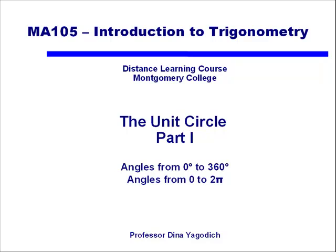This video is part one of two dealing with the unit circle. This is a very important part of the course, and one you really need to pay attention to. This will cover the angles between 0 and 360 degrees on the unit circle, as well as those same angles in radians. We're going to be paying particular attention to our special angles: 30 degrees, 45 degrees, and 60 degrees.